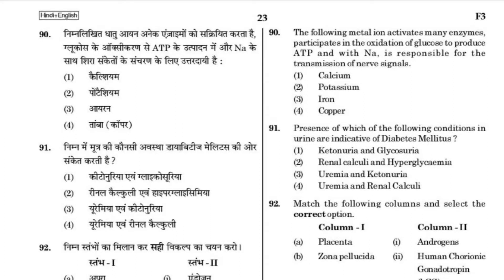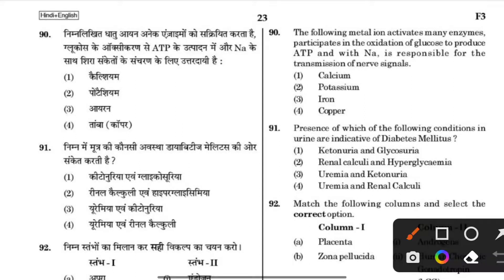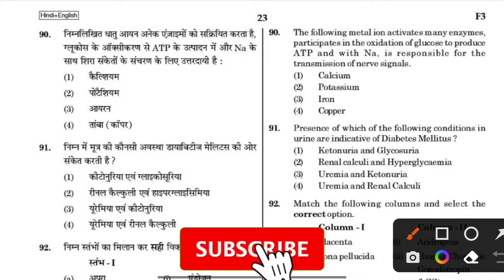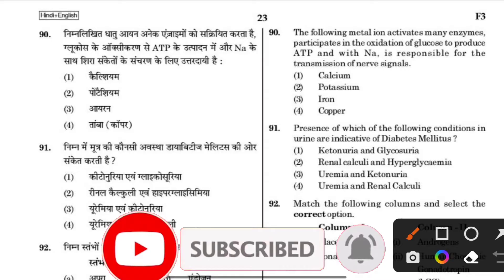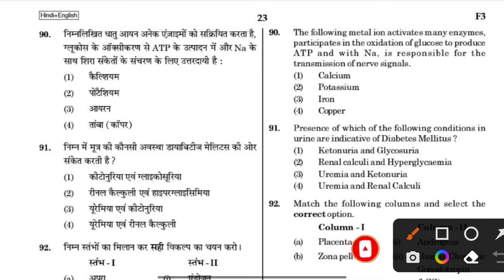The following metal ion activates many enzymes, participates in oxidation of glucose to produce ATP, and with sodium is responsible for the transmission of nerve signals. The answer is potassium.